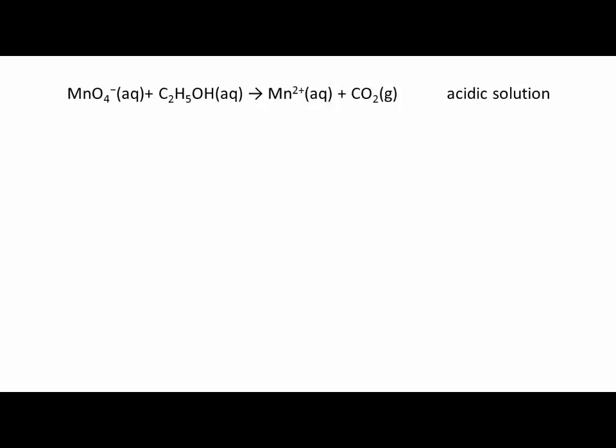The principal reactants and products now defined, we want to identify what is reduced and what is oxidized. To do this, assign the oxidation states of each atom. In this example, we see that Mn is reduced from positive 7 to positive 2, and the C is oxidized from negative 2 to positive 2.